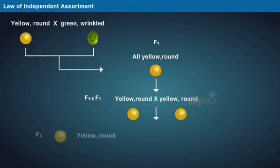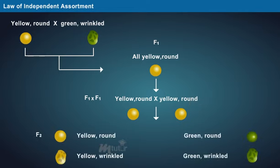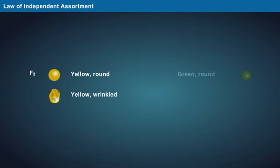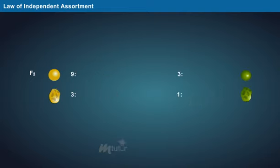While in the F2 generation, he was able to observe all the traits when the plants were self-pollinated. The ratio of the dominant and recessive traits in the F2 generation was 9 is to 3 is to 3 is to 1, that is, round yellow...